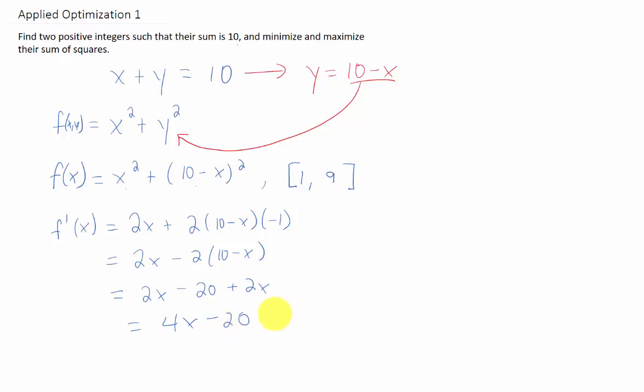Now let's distribute, and I'm getting 4x minus 20 as our first derivative. Now if we want critical points, we have to set that first derivative equal to 0. If we add 20 to both sides and divide by 4, we get that x equals 5 is a critical point of this sum of squares function.